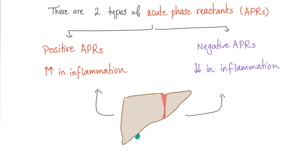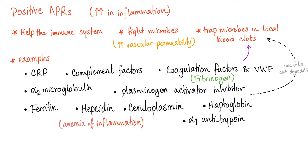Positive acute phase reactants increase in inflammation. They help the immune system and fight microbes. One mechanism is by increasing vascular permeability, allowing white blood cells to exit the blood vessel, travel into the tissue, and destroy bacteria. The liver decreases negative APRs and increases positive ones — both are produced by the liver.